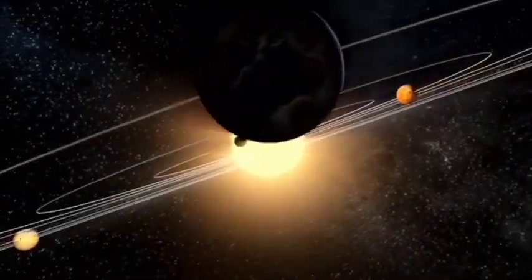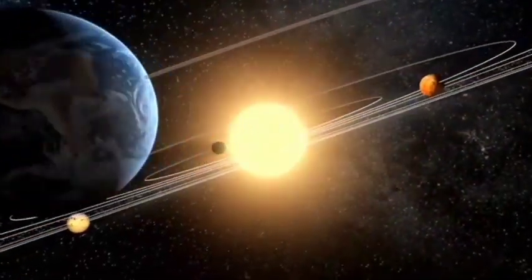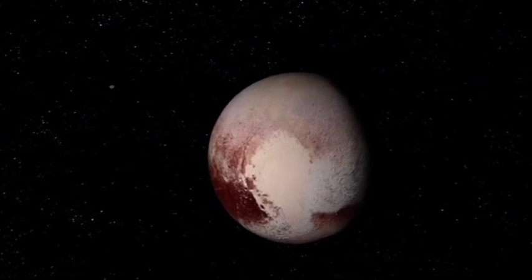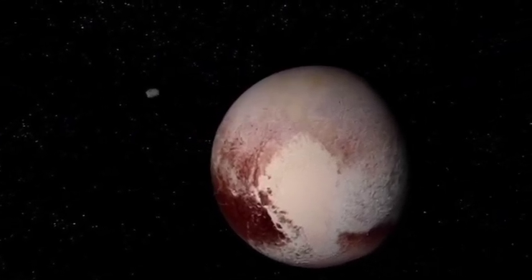Betelgeuse, a star in the Orion constellation, is acting strange, suggesting it might explode into a supernova, lighting up our sky like never before. Let's dive deep into what's really going on with Betelgeuse and how it might affect Earth and the whole solar system.